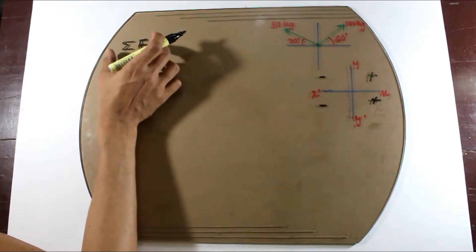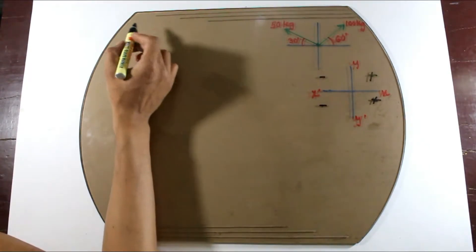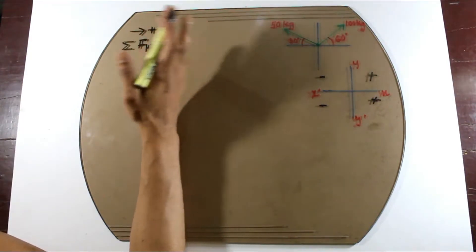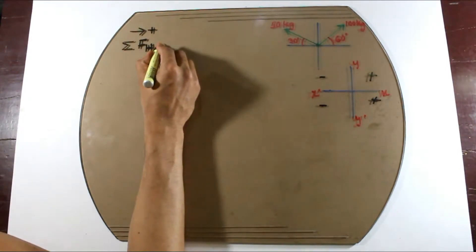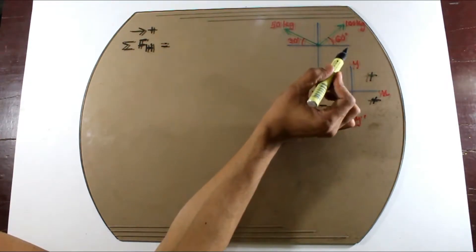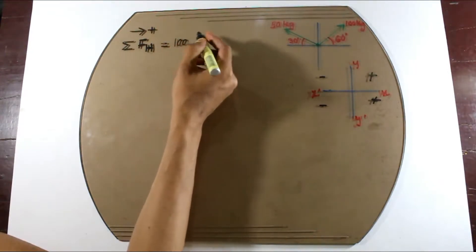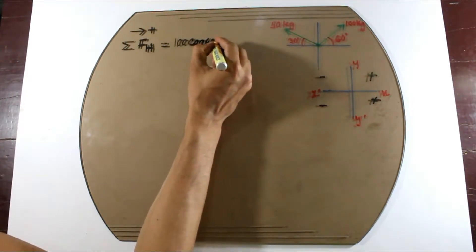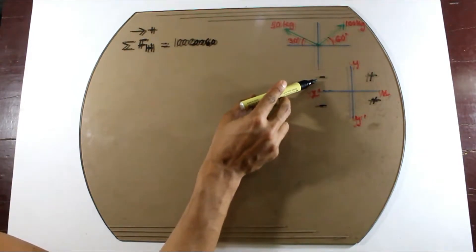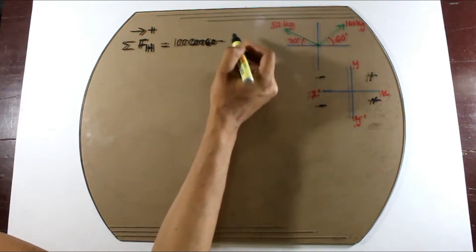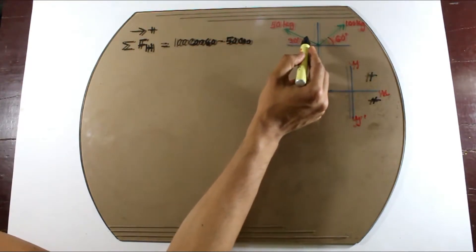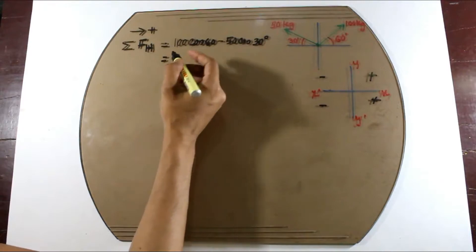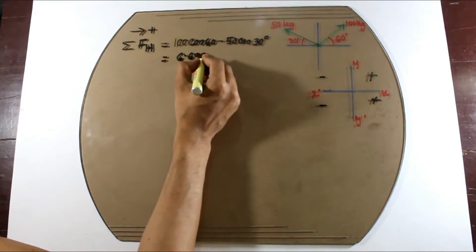So we will have to look at the summation of FH. We will see the downside of the ball is positive. What is the downside? The downside of the 100 kg force — we will see the horizontal component of the ball, which is the cosine of 60 degrees. Now the 50 kg force is negative. So we will see that the result of FH is 6.698 kg.